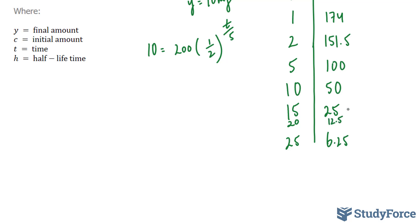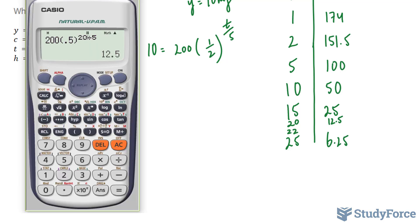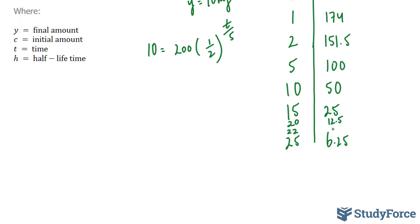The amount that we're looking for, the time, needs to be between 20 and 25. Let's try one more. Let's try 22. At 22, we have 9.47.